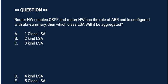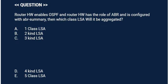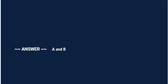Option A: one class LSA. Option B: two kind LSA. Option C: three kind LSA. Option D: four kind LSA. Option E: five class LSA. Correct answer is Option A and Option B.